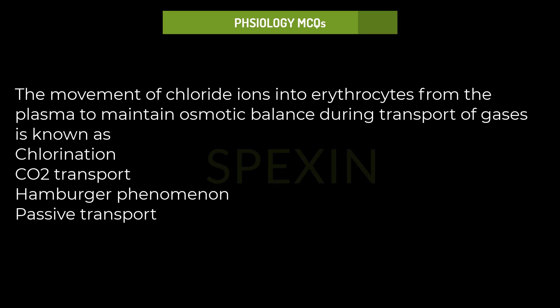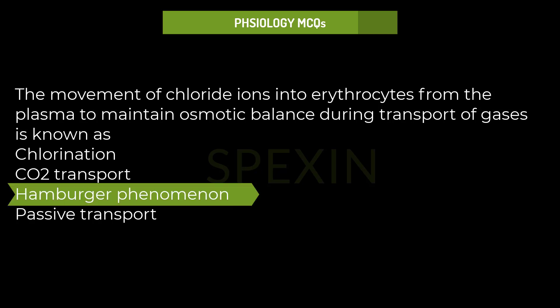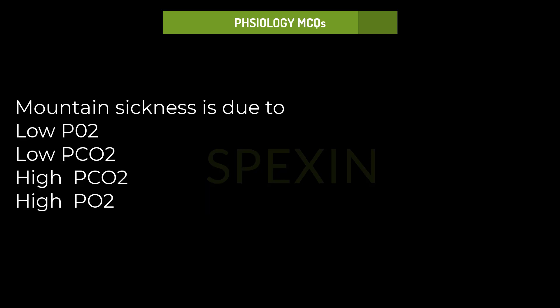The movement of chloride ions into erythrocytes from the plasma to maintain osmotic balance during transport of gases is known as: Chlorination, CO2 transport, Hamburger phenomenon, Passive transport. Correct answer: Hamburger phenomenon.